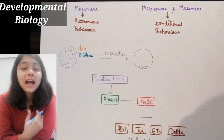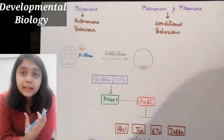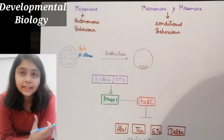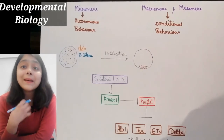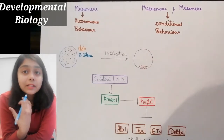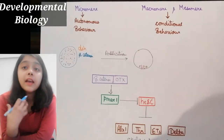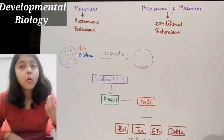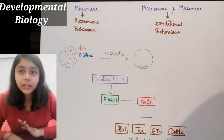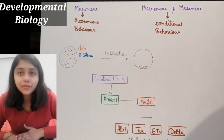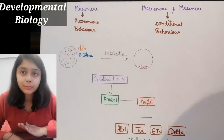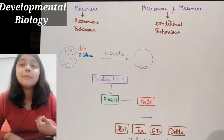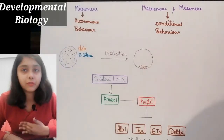Autonomous behavior means the cell doesn't depend on anyone — division is not dependent on any external cells or external environment. Conditional behavior means it has a condition; it depends on the cell and the environment to divide. In sea urchin, micromere follows autonomous behavior and macromere and mesomere follow conditional behavior.